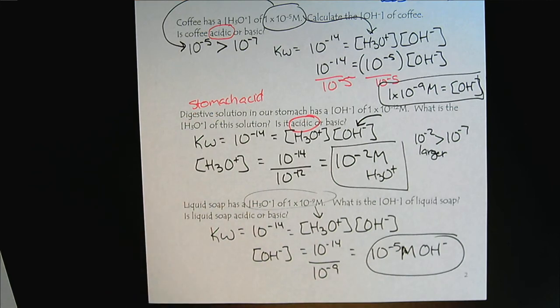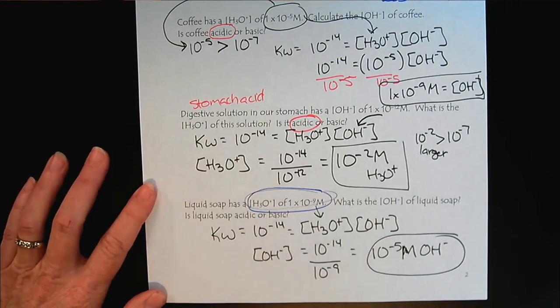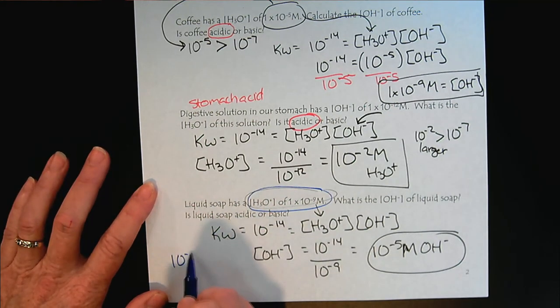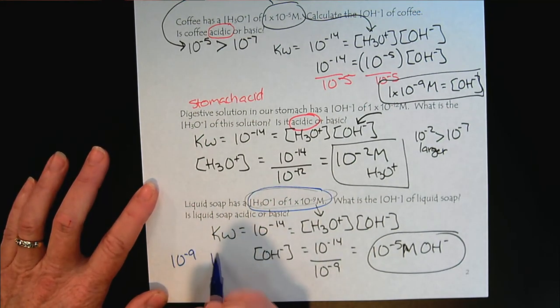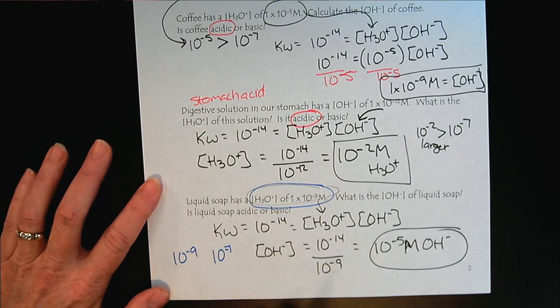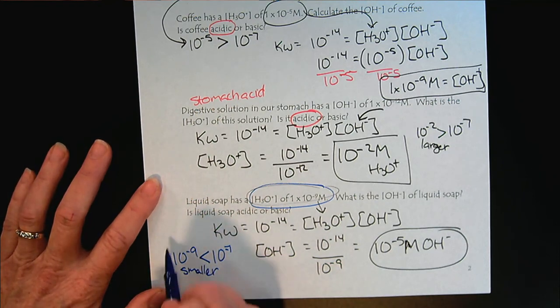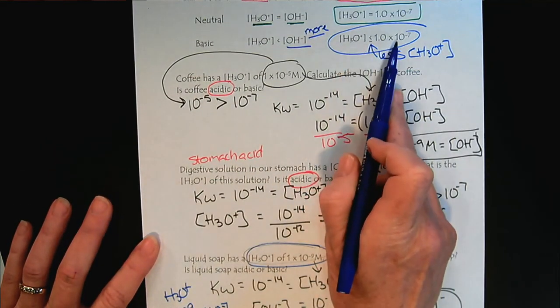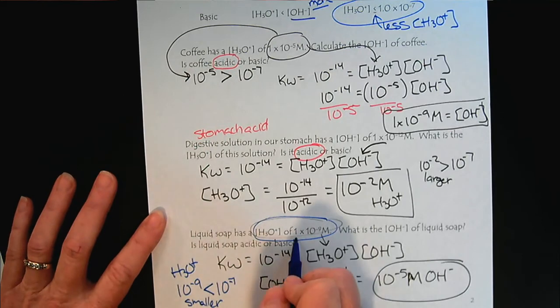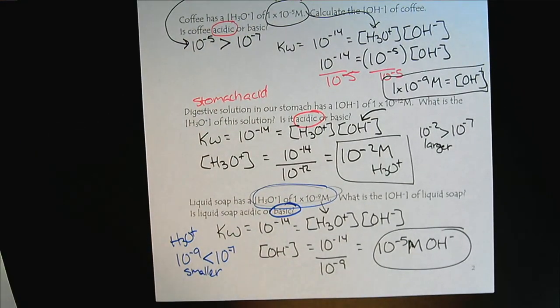Is soap acidic or basic? Well, here's our hydronium ion concentration. 10 to the minus 9 versus 10 to the minus 7. So in this case, the 10 to the minus 9 is smaller. So since the hydronium ion concentration is less than 10 to the minus 7, we recognize that soap would be a basic solution.